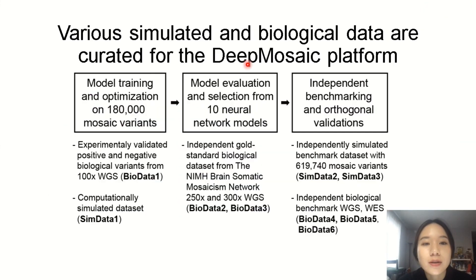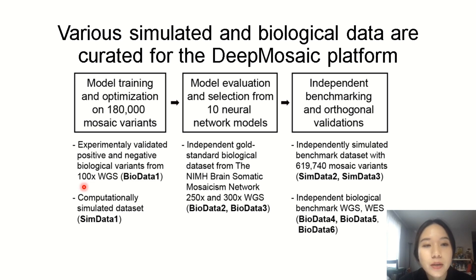Hi, I'm Xing Xu, the co-first author of the Deep Mosaic paper. We generated various simulated and biological data to train and validate the Deep Mosaic model. 180,000 mosaic variants were used for model training. This training set included both simulated variants and experimentally validated variants from whole genome sequencing data. Then, for further model selection, benchmarking, and orthogonal testing, we used different sets of independent data to ensure that our model can be generalized to datasets it hasn't encountered before.